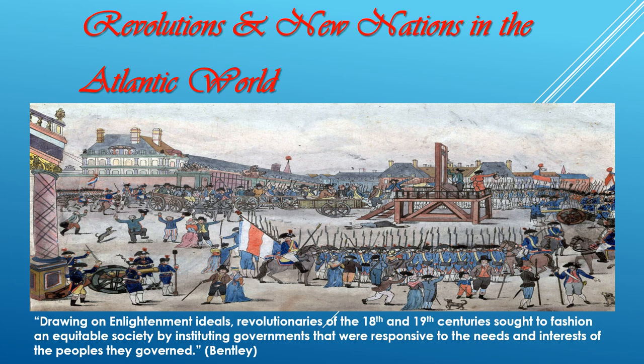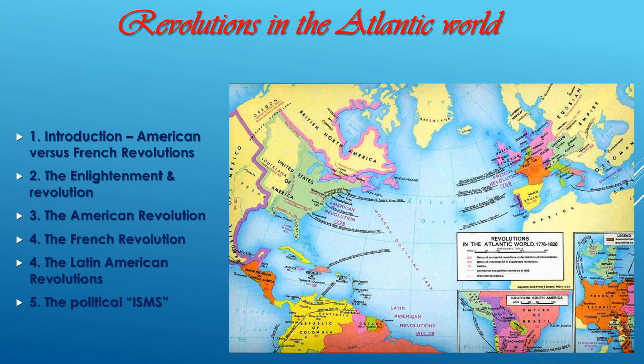Bentley tells us that drawing on Enlightenment ideals, revolutionaries of the 18th and 19th centuries sought to fashion an equitable society by instituting governments that were responsive to the needs and interests of the peoples they governed — which is to say that these revolutions incline in a democratic direction, fighting for and implementing representative participatory government, what we call democracy today.